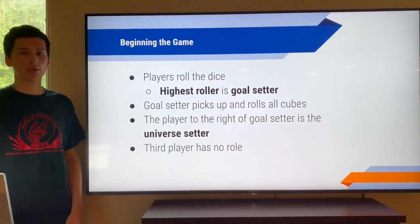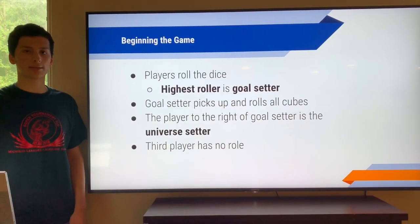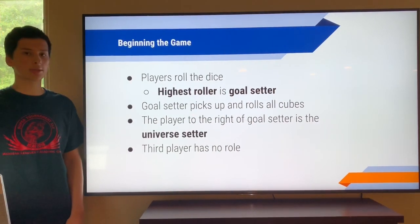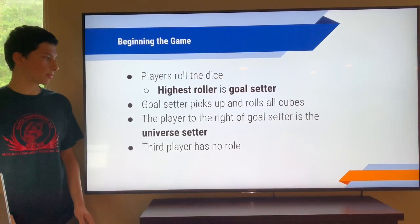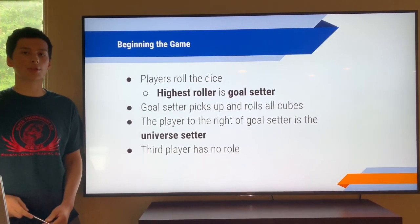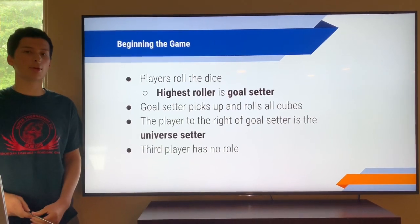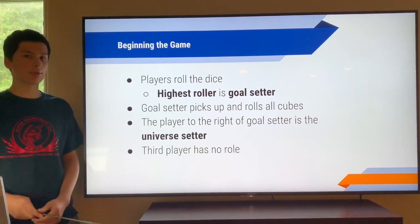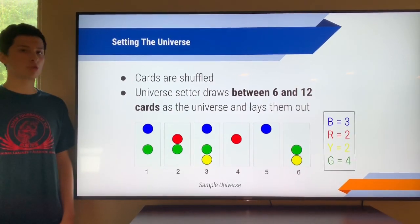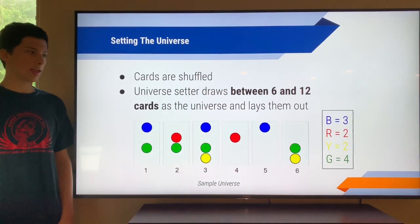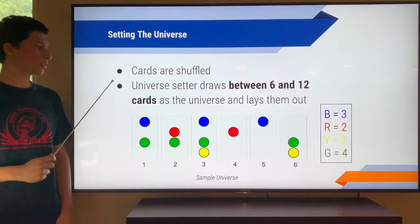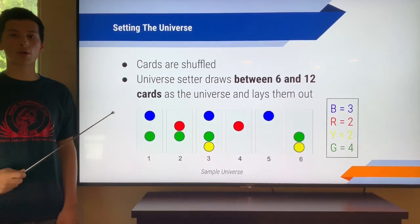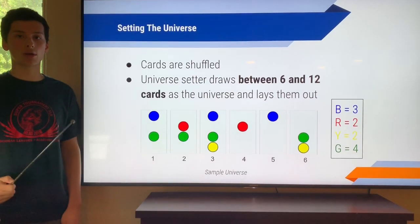So when you begin the game, all players roll the numerical dice. Since there are 3 of them, there should be enough for you and other players. The highest roller is the goal setter. The goal setter picks up and rolls all the cubes. The player to the right of the goal setter is what's called the universe setter. If you played equations before this, the universe setter is something new that is in addition to onsets. The third player has no role. When you're setting the universe, you begin by shuffling the cards. Then, you draw between 6 and 12 cards and lay them out face up so that other players can see them. The number of cards that you draw is your choice, but which cards you draw is randomized.